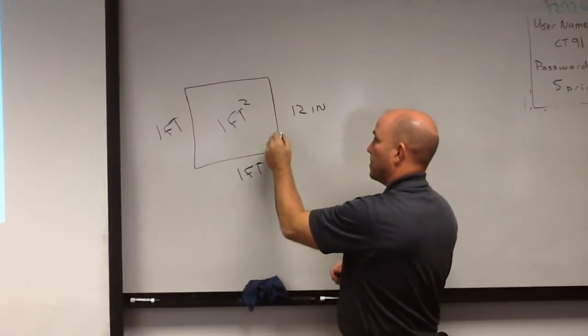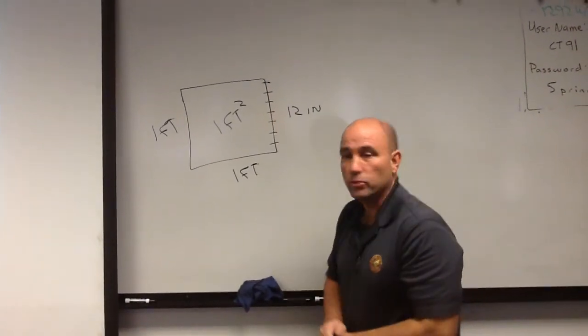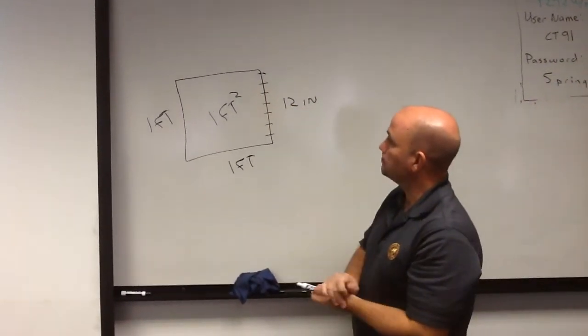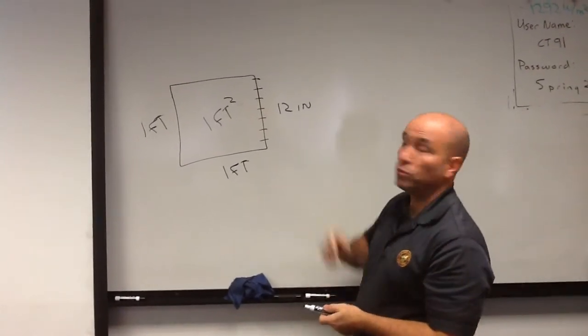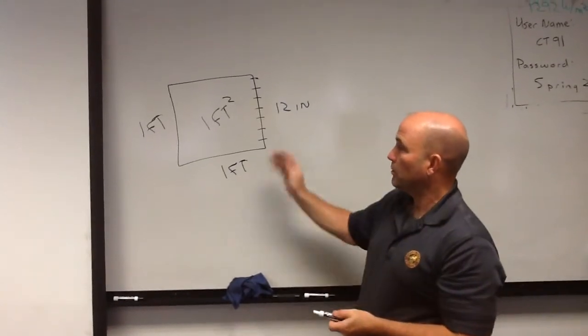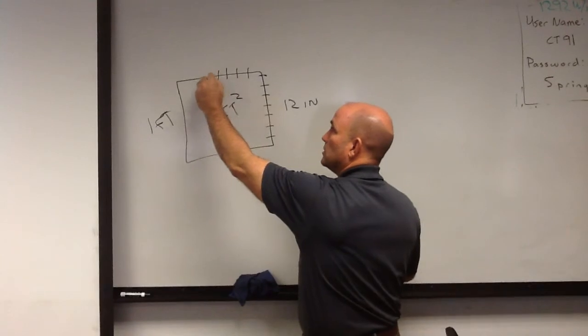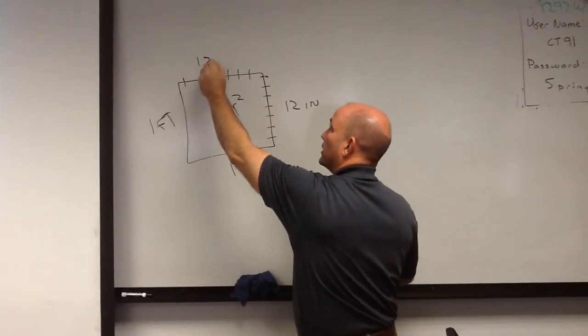And so, if we put 12 inches, that's not quite 12 inches, obviously. That would be converting 12 inches, or one foot into 12 inches. But if we're doing square, we have to do it this way as well, right? 12 inches.